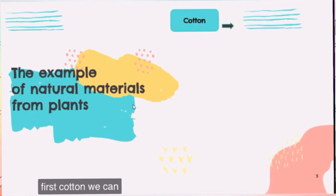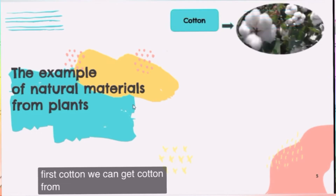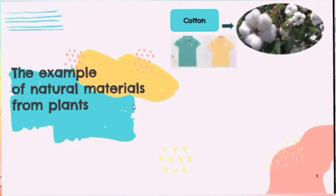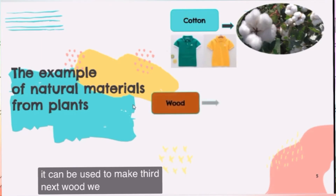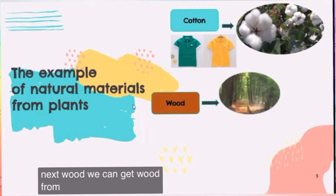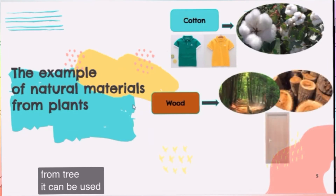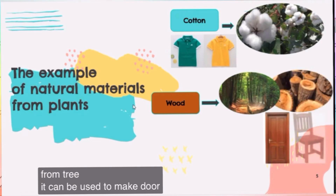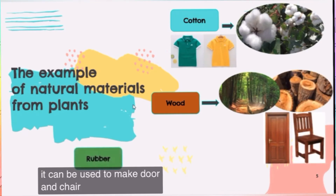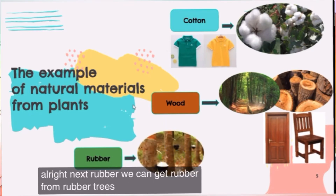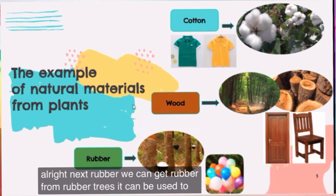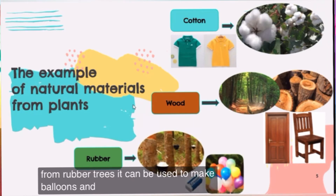Now let's take a look at examples of natural materials from plants. First, cotton — we can get cotton from the cotton tree. Next, wood — we can get wood from trees, and it can be used to make doors and chairs. Next, rubber — we can get rubber from rubber trees, and it can be used to make balloons and erasers.